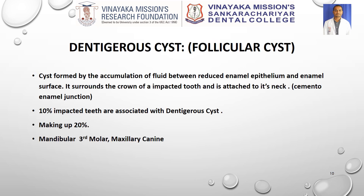Next is the dentigerous cyst, also called follicular cyst. This is the most common odontogenic developmental cyst. The cyst is formed by accumulation of fluid between the reduced enamel epithelium and the impacted tooth. It surrounds the crown and is attached at the cementoenamel junction. About 10% of all impacted teeth, if left, may convert to a dentigerous cyst, making up 20% of all odontogenic cysts. The most commonly affected teeth are the third molar and maxillary canine.